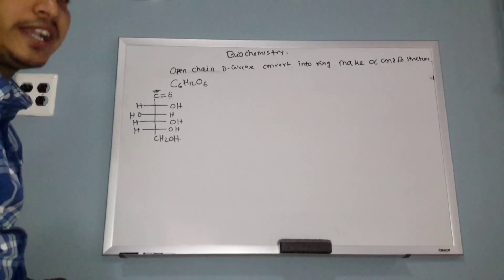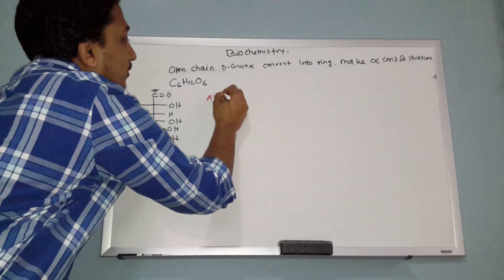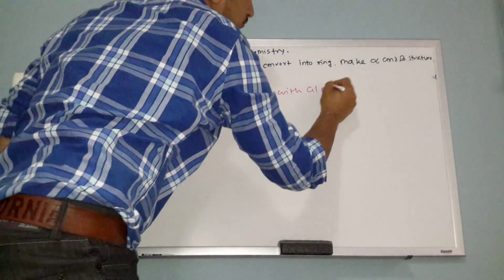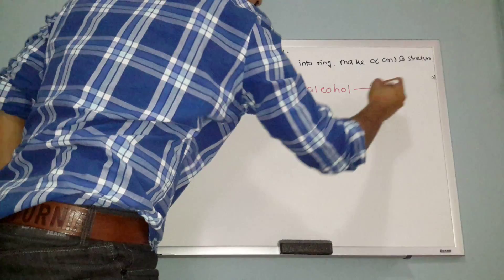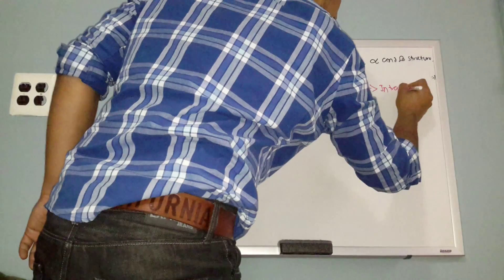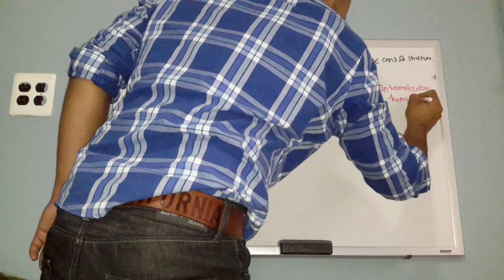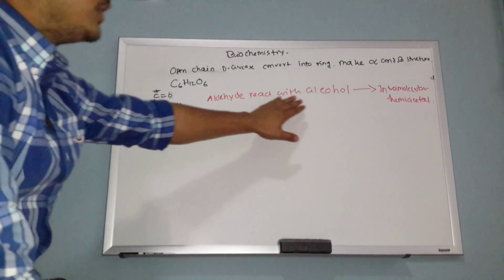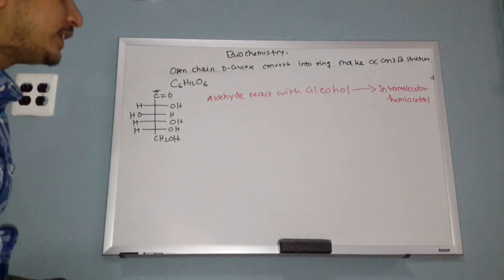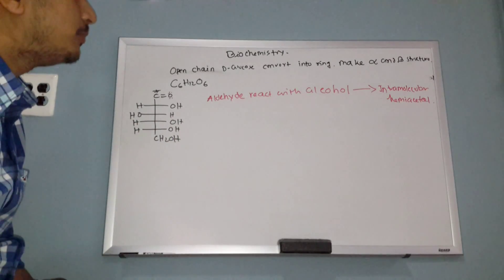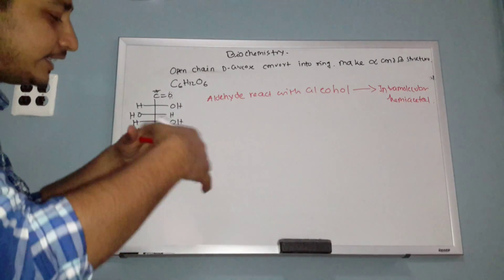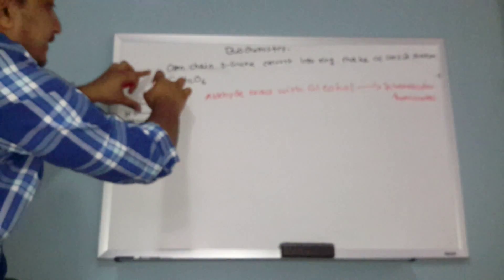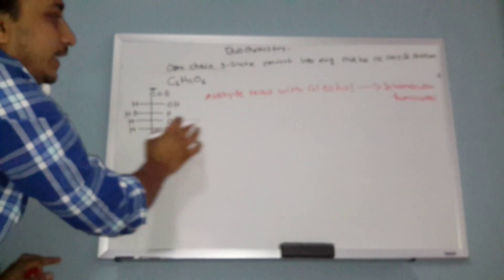You know that if an aldehyde reacts with any alcohol, it gives us an intramolecular hemiacetal. In glucose, both the aldehyde and the alcohol (OH) are inside the same molecule — everything is in the same chain. So the aldehyde and alcohol react within glucose to give us an intramolecular hemiacetal.